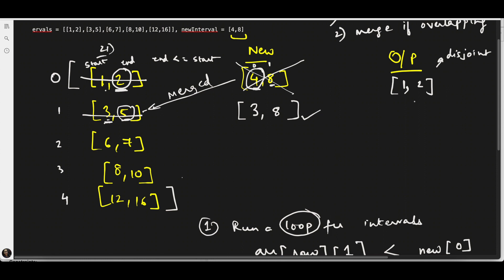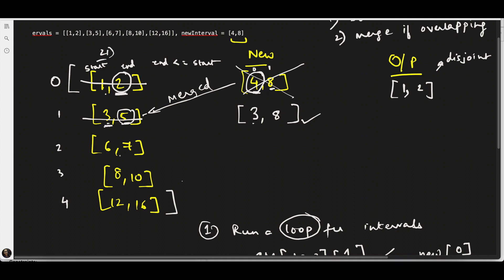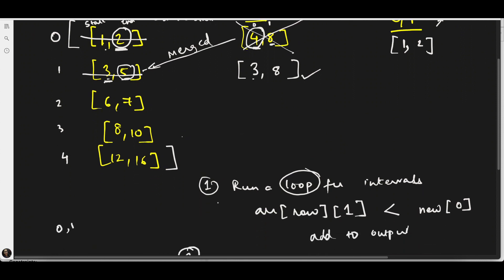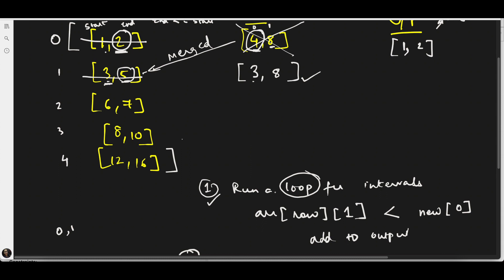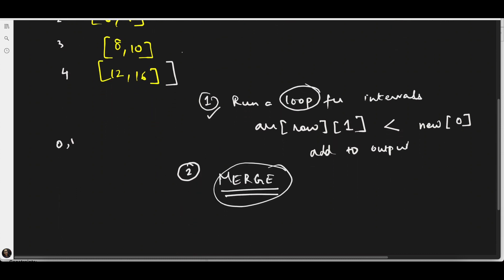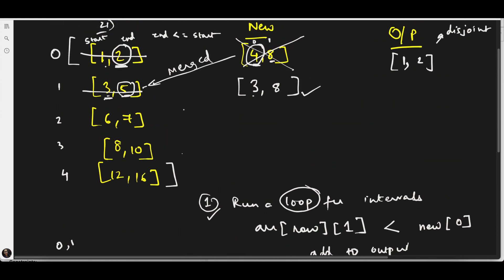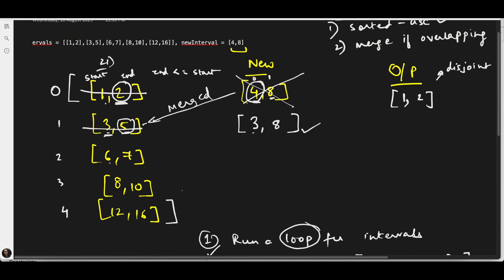Shall I add 3 to 8 to the output? No. Because we do not know if any other intervals down the line also need to be merged with this. If we add it to the output, we have lost that interval. So 3 to 8 is the new interval going forward. With this new interval, we have to recheck the rest of the intervals — whether we need to merge or not. Now 3 to 8 and 6 to 7 are compared.